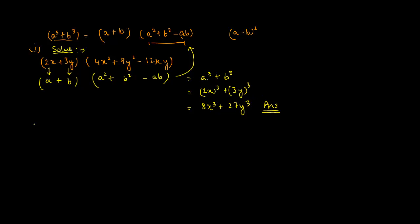Let's take another question on this particular identity. Let's say you had (0.5x + 0.8y) into (0.25x² + 0.64y² - 0.40xy).